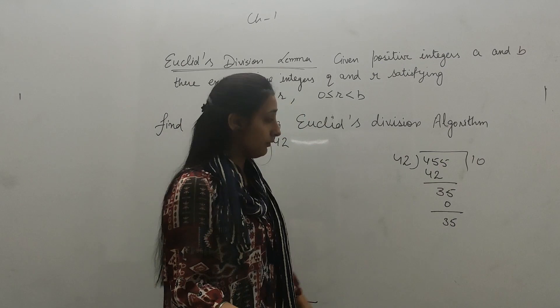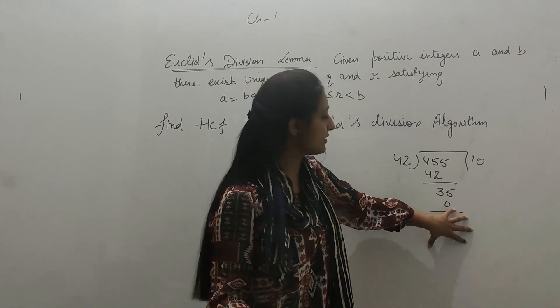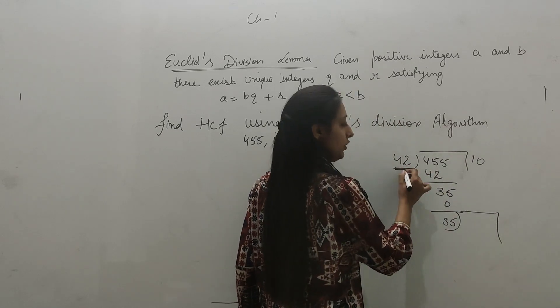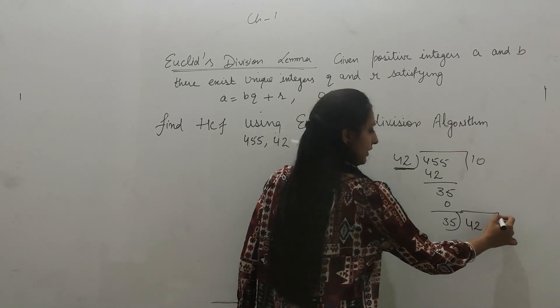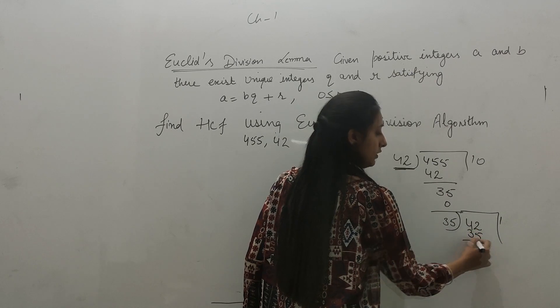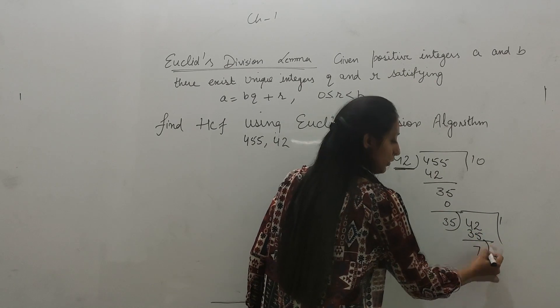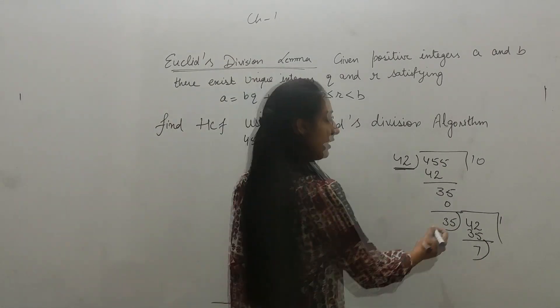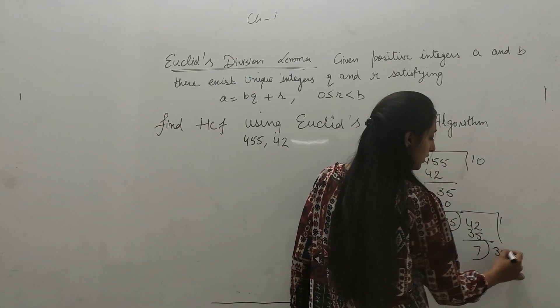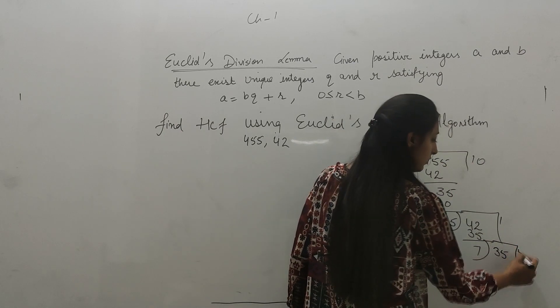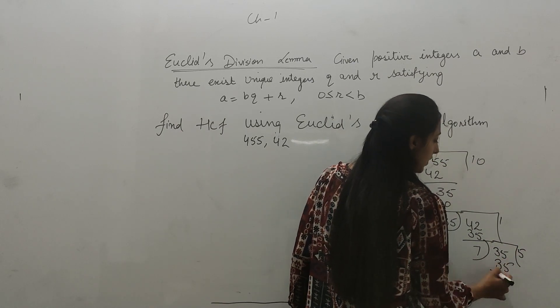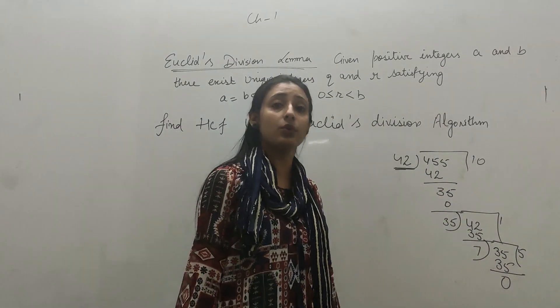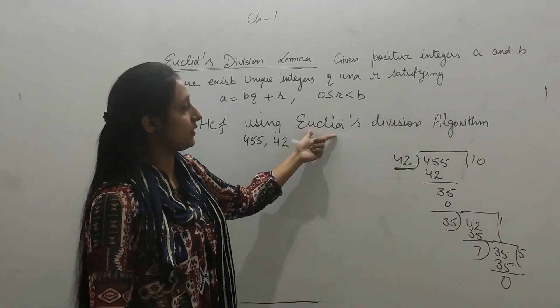The quotient is ten and remainder is 35. Now we will make this remainder the divisor and this divisor 42 will be dividend. So divide again, 35 into 42, we get quotient one and remainder seven. Now the remainder seven will be the divisor and 35 will be the dividend. So divide again. We will divide till we get the remainder zero. Now we got the remainder zero.